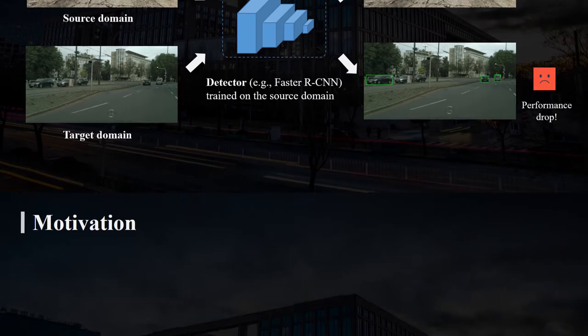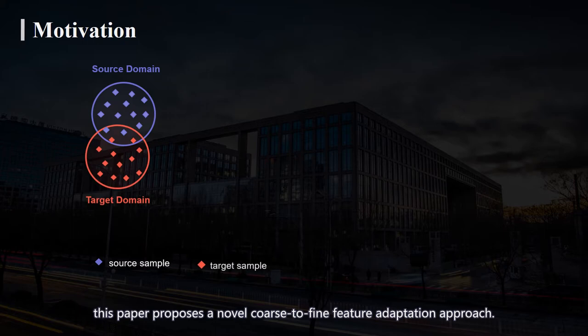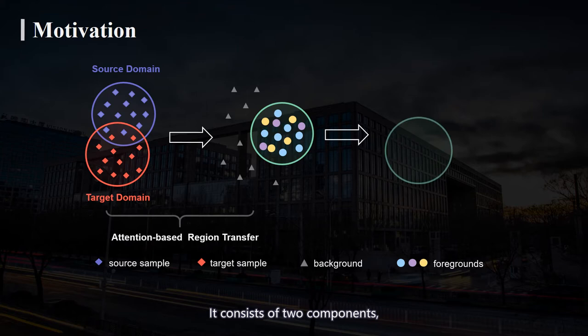To address such an issue, this paper proposes a novel coarse-to-fine feature adaptation approach. It consists of two components: attention-based region transfer and prototype-based semantic alignment.